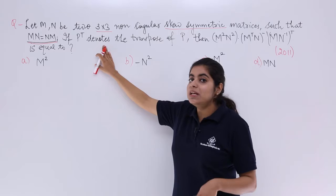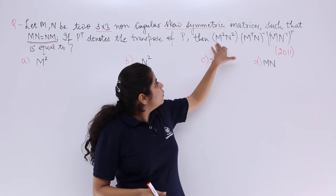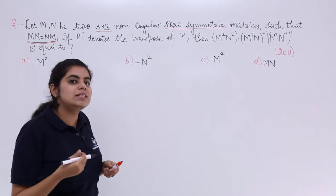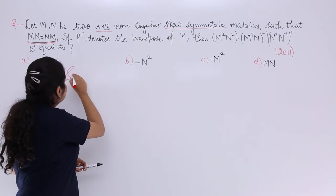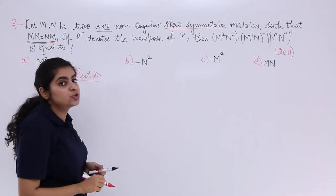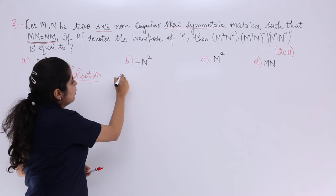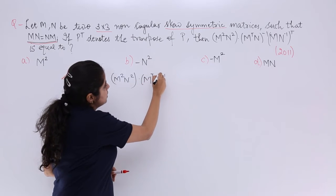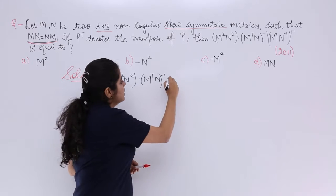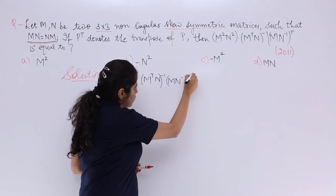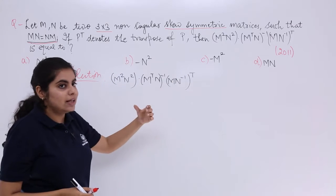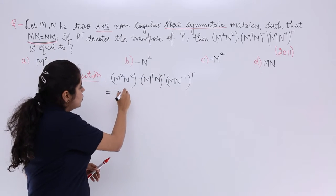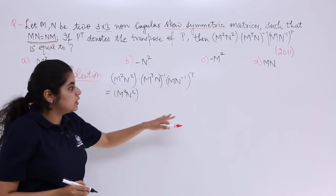If P^T denotes the transpose of P, then you have to find the value of this lengthy expression: M²N²(M^T N^{-1})^{-1}(MN^{-1})^T. We have four options, we'll see later on which option is the correct answer. Please take care while noting the elements — do not confuse the brackets, inverse, or transpose, as these are very important.